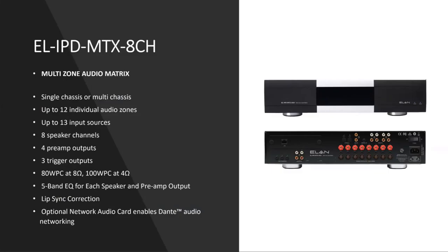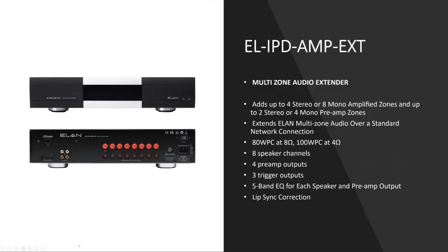The next chassis is the AMP EXT. One thing you'll see on this chassis is there are no inputs — this is just the output section, the same output section as the MTX 8-channel. A lot of systems have far more outputs than inputs, so when you run out of outputs, instead of needing a whole chassis for sources you may not need, you can add these outputs to the system. The outputs are 80 watts per channel at 8 ohms, and 100 watts per channel at 4 ohms. This is an audio over IP only device — since it has no sources without another audio over IP enabled device, it doesn't do anything standalone.